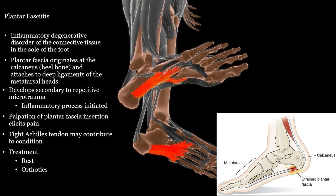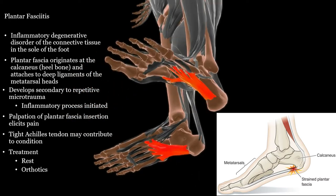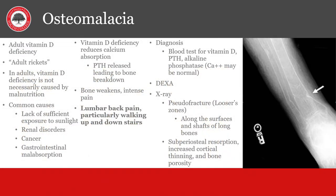Plantar fasciitis is very common and occurs due to repetitive motion, causing heel and sole pain in the foot. Stretching exercises, shoe inserts, and steroid injections can help. Rickets is vitamin D deficiency in children that can be corrected with vitamin D and calcium supplementation, which will reverse the bowing of the legs. Check serum ionized calcium, PTH level, alkaline phosphatase, and 25-hydroxy vitamin D levels, along with multiple X-rays. After the growth plates close, severe vitamin D deficiency can still cause soft bones — this is called osteomalacia. Diagnosis is by X-ray along with serum 25-hydroxy vitamin D level; treat with vitamin D replacements.